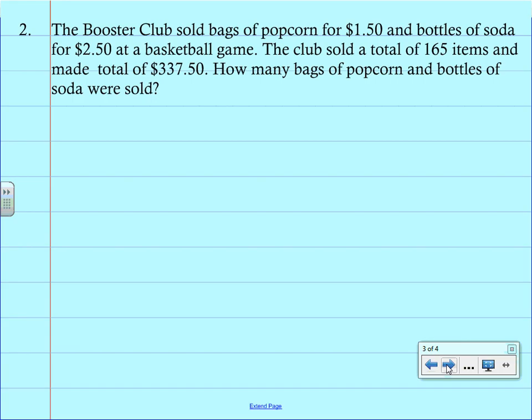In this scenario, we have the booster club selling bags of popcorn and bottles of soda at a basketball game. It tells us the club sold a total of 165 items and made a total of $337.50. Now if you look at the question, here's where you're going to determine what your variables will be. It says how many bags of popcorn and bottles of soda were sold. So for this, we're going to let X be bags of popcorn and Y be bottles of soda.